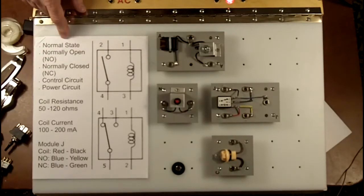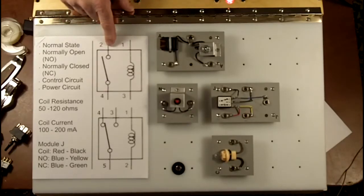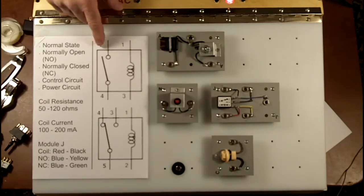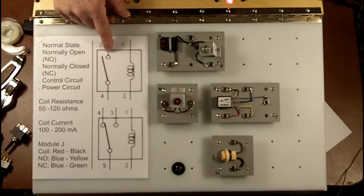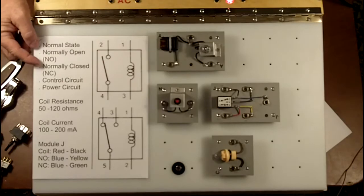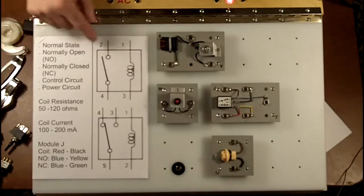The normal state of a relay is non-energized. So when a relay is drawn in a schematic, it's drawn as though there's no current going in here. So normal means not energized. In this case, since these contacts are shown open, this is a normally open 4-pin relay or an NO relay.